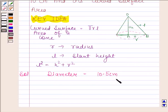Now, as diameter is equal to 10.5 cm, therefore, radius is equal to 10.5 by 2 cm.